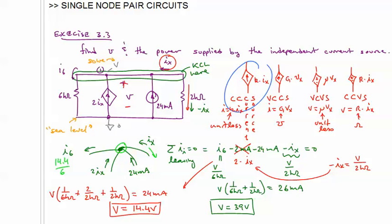This current here is going to be 14.4 over 2K. And then the current leaving here is actually going to be 2 times the 14.4 over 2K. So it's 14.4 times 2 over 2K, so just over 1K.